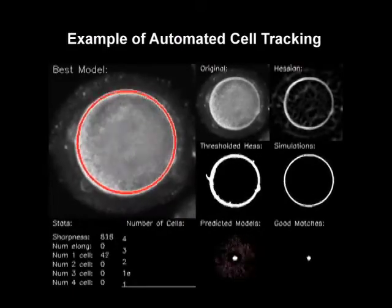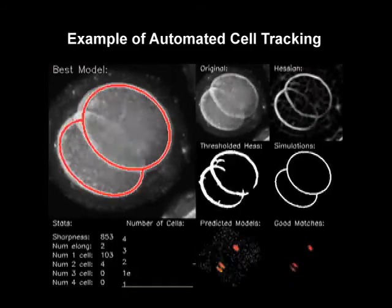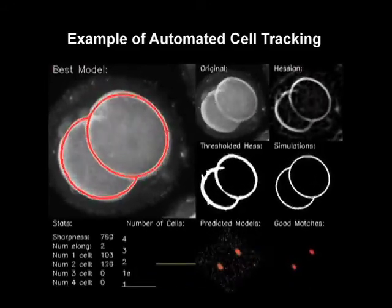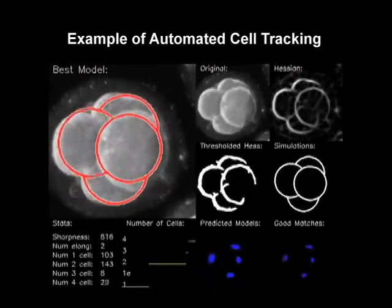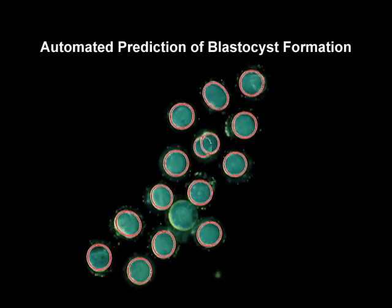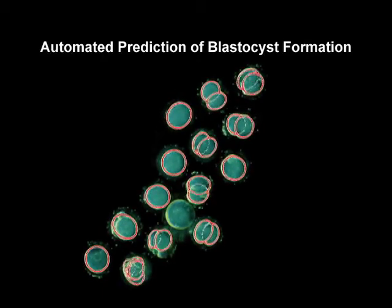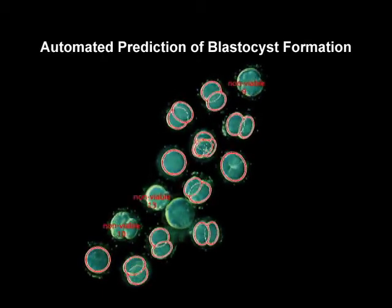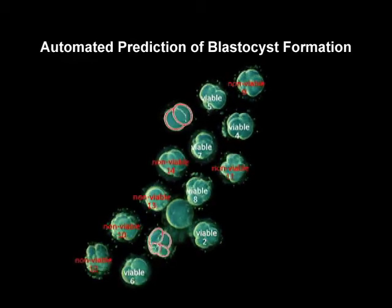Here is an example of a single embryo showing how the automated cell tracking process works. With the use of this automated cell tracking algorithm to determine normal and abnormal parameter timing windows identified in Wong et al., blastocyst formation can be noninvasively predicted early in development prior to embryonic genome activation.